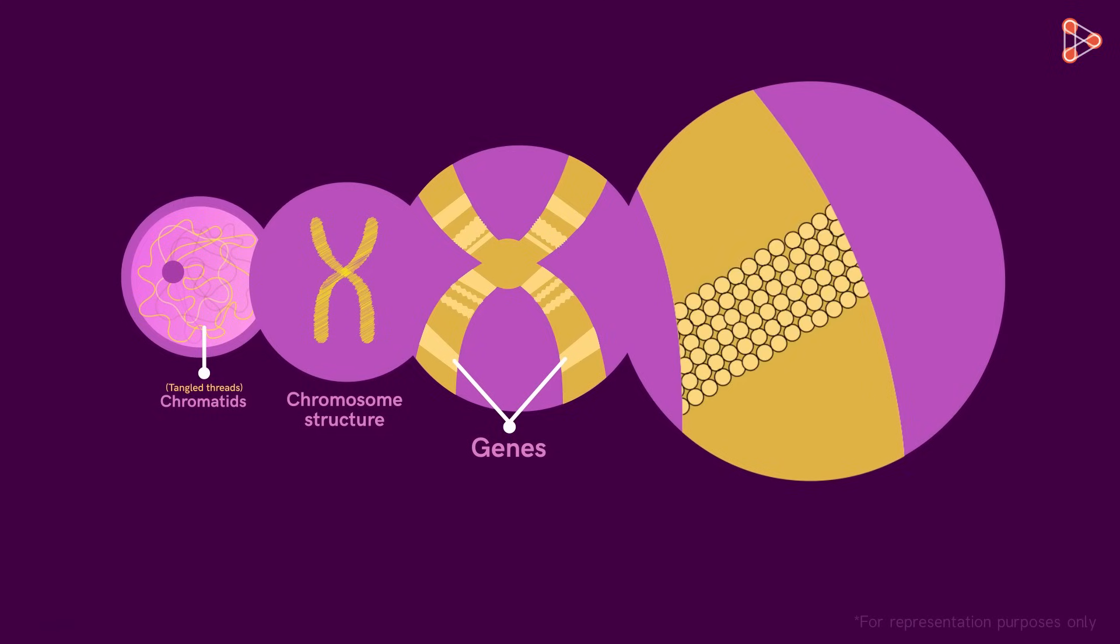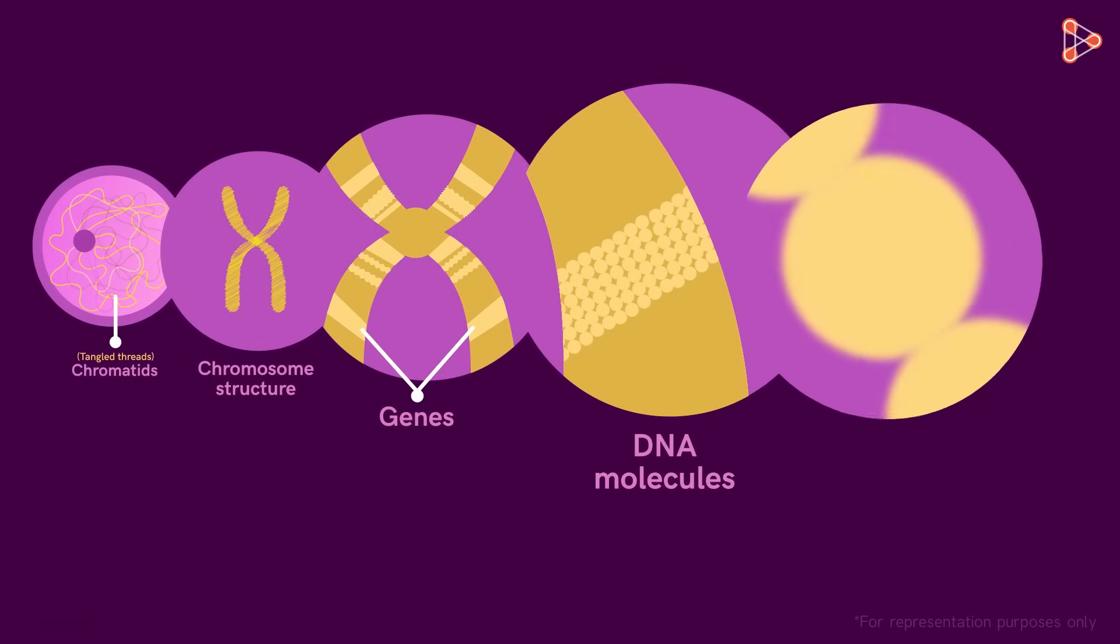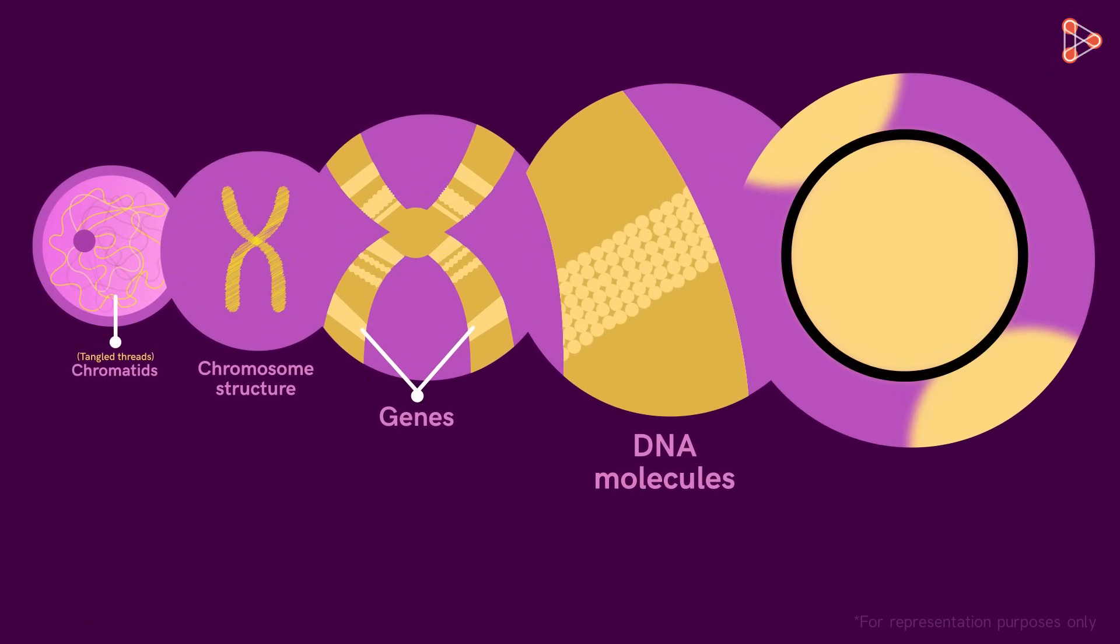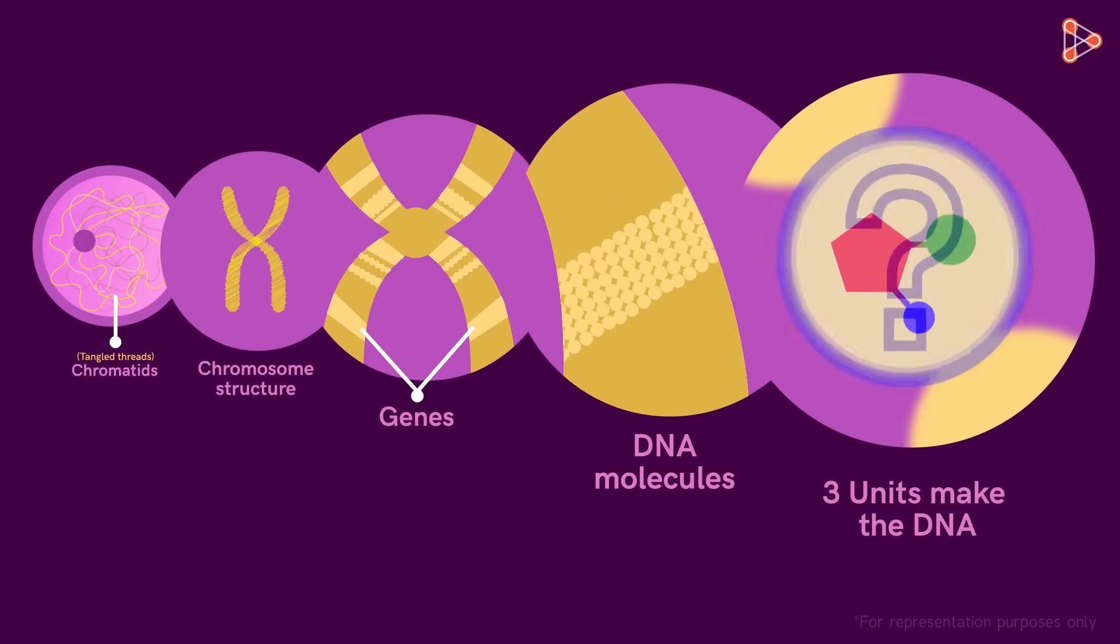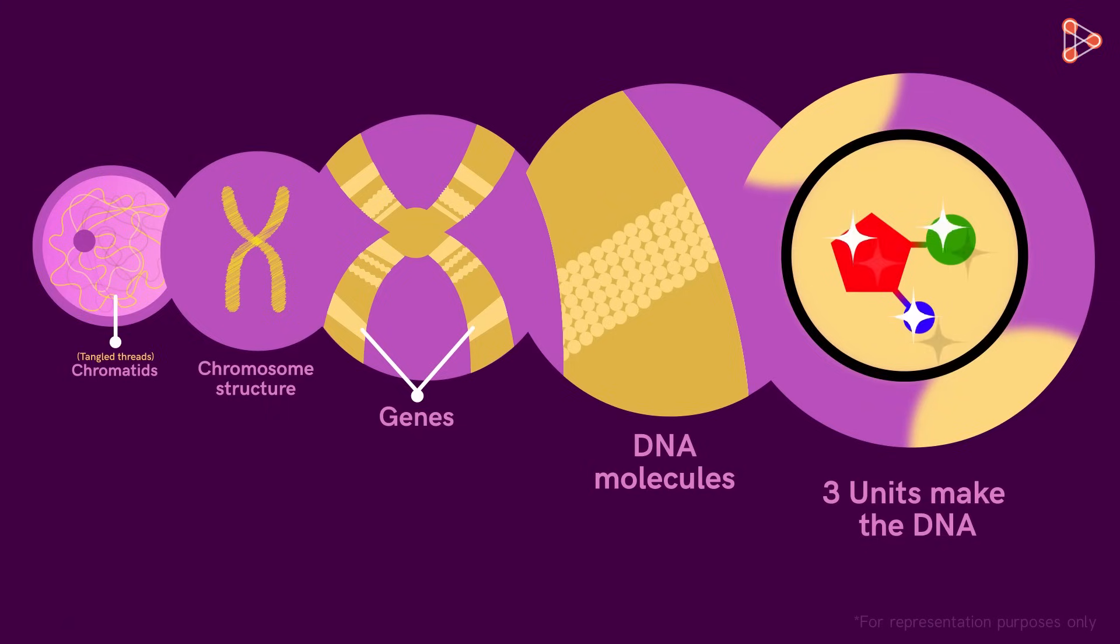These large molecules, or macromolecules to be precise, are DNA molecules. This is not a new term for us. We are quite familiar with the term DNA, as it is very commonly used these days. But what exactly are these DNA molecules? Well, this single large molecule is composed of three units. And what units are these? Let's reserve this explanation for our upcoming videos. For now, all we need to know is that DNA is made up of these units.